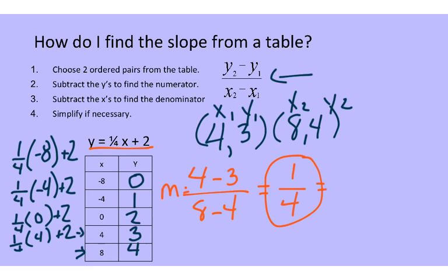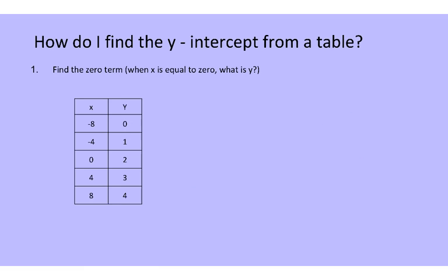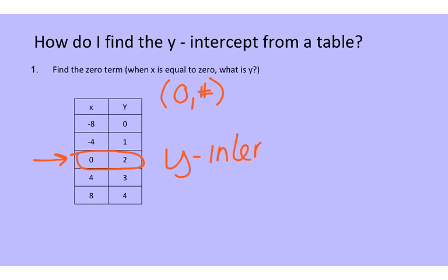Remember that slope is rise over run. So a slope of 1/4 means the line will go up 1 and over 4 every time. For the y-intercept, we go to the 0 in the x value — that ordered pair gives us a y-intercept of positive 2.